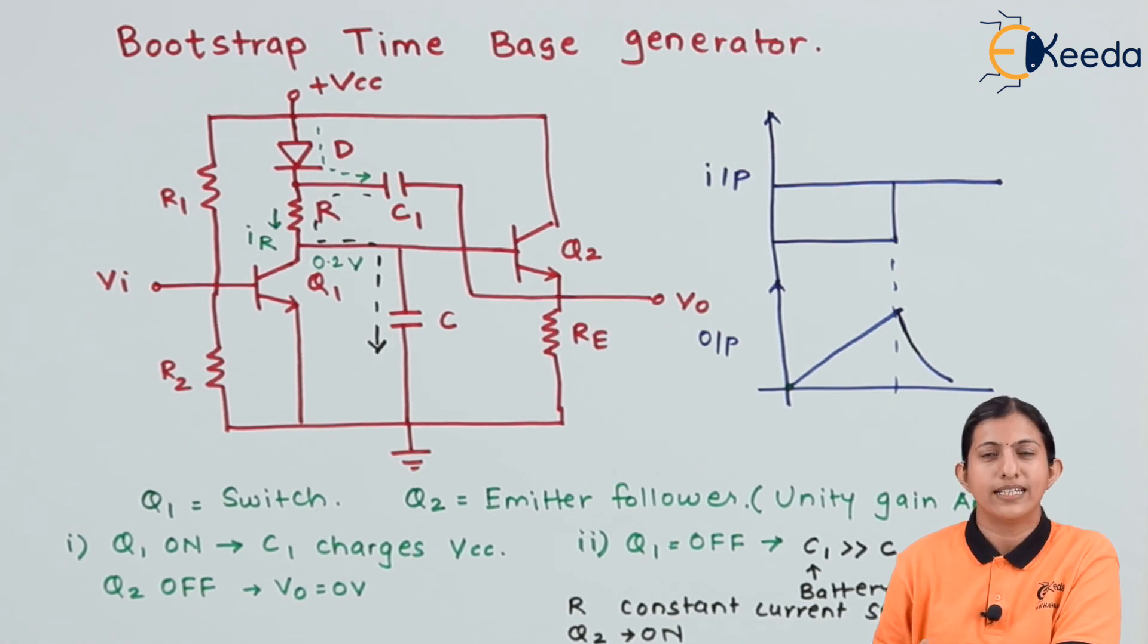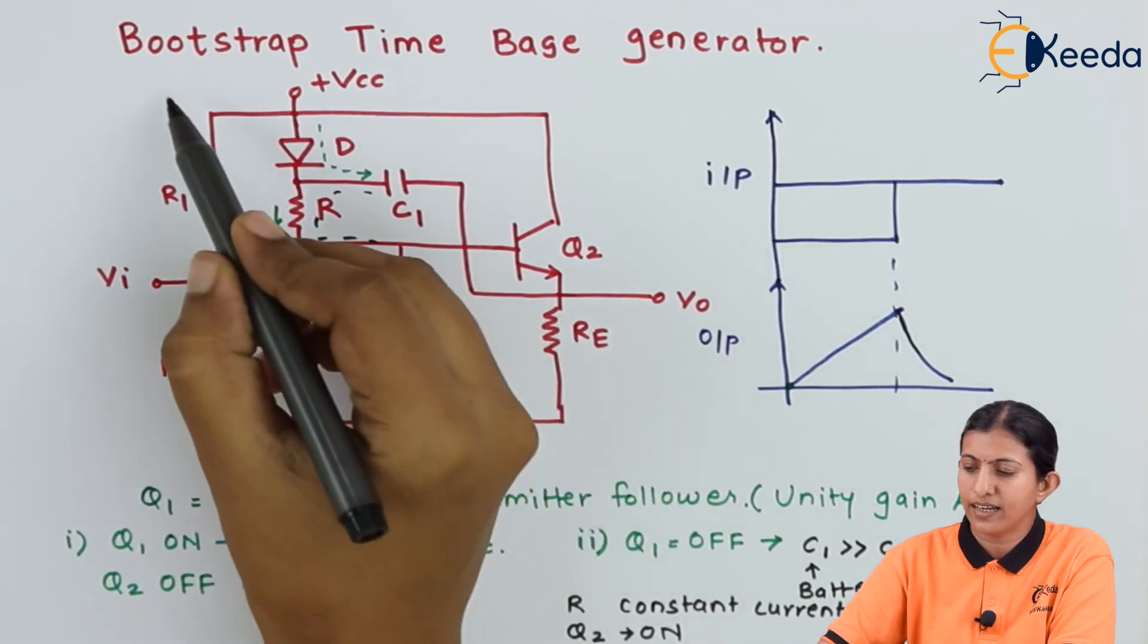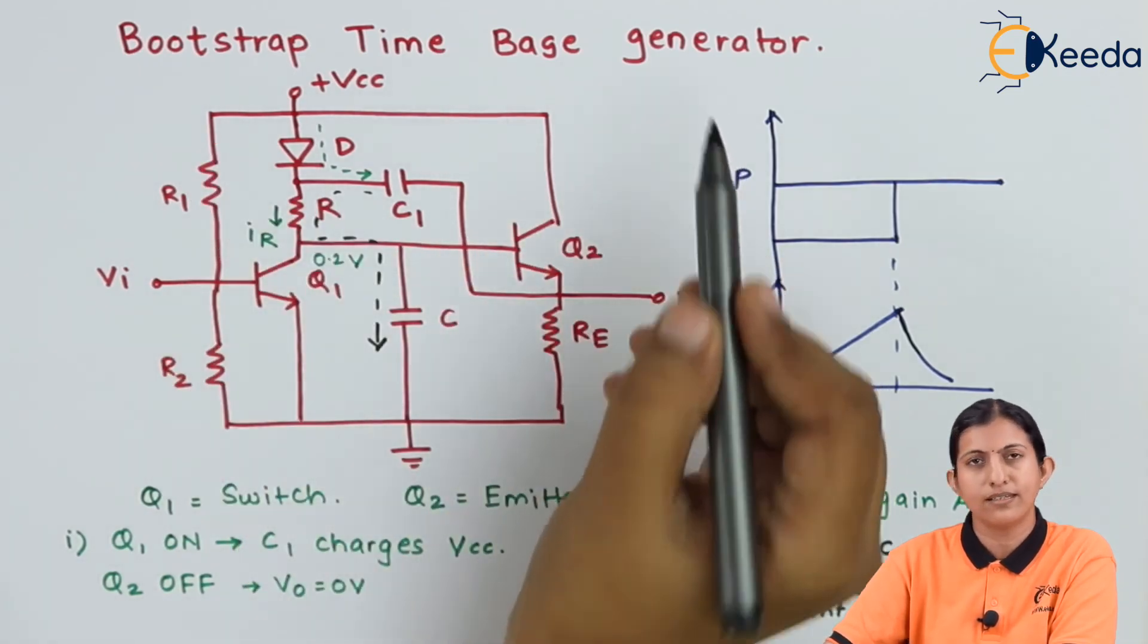The circuit pulls itself up by its own bootstrap. Hence, this circuit is named as the bootstrap time-based generator.